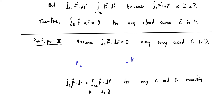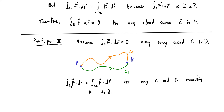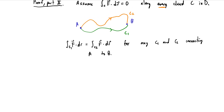So we pick c1 as any path from a to b, and c2 as any other path from a to b. These don't have to be simple paths — simple would mean they don't intersect — that's not one of our assumptions. If I want to travel along c1 first and then reverse everything to get back to a, I need to go along negative c2. So the integral along c1 minus c2 of f dot dr is the integral along a closed path.